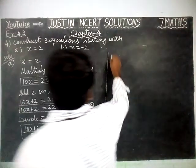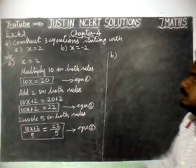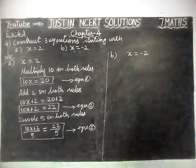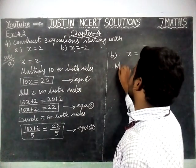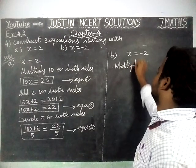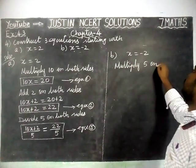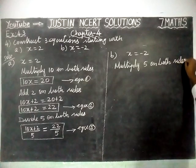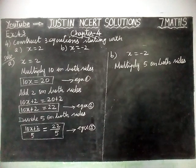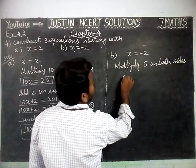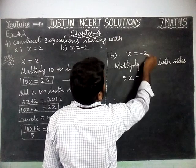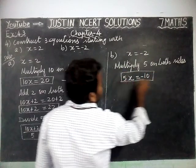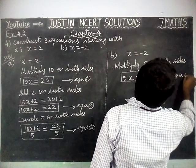Now, part B: we are going to construct 3 equations starting with x is equal to minus 2. We are going to multiply 5 on both sides. We can choose any value and any operator. So, 5 into x is equal to 5x is equal to minus 10. This is equation 1.